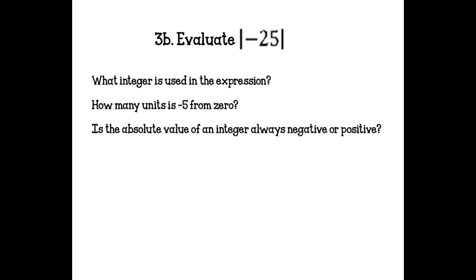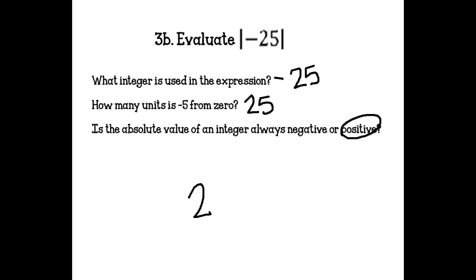Evaluate the absolute value of negative 25. Negative 25 is too big for a number line, so we do this without a visual. The integer is negative 25, and it is 25 units from 0. The absolute value of an integer is always positive, so the answer is 25.